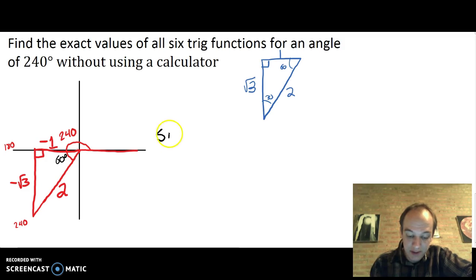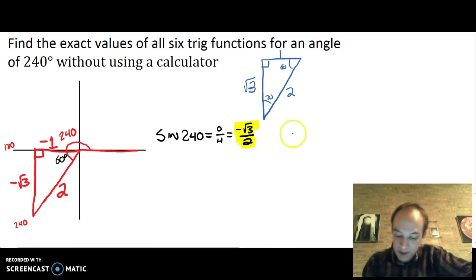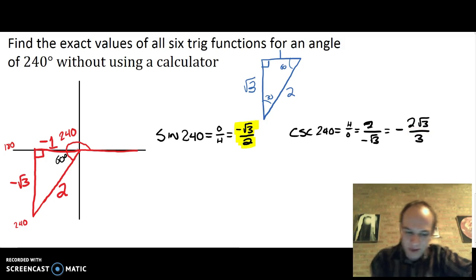Now it's time to do the trig. Sine of 240° is going to be opposite over hypotenuse, or negative root three divided by two. Conveniently, this is already rationalized, so I'll just leave it as is. Cosecant of 240° is going to be hypotenuse over opposite. That's going to be two divided by negative root three. This one I do need to rationalize. I'm going to imagine moving the negative out front and write this as negative two root three over three. Final answer.